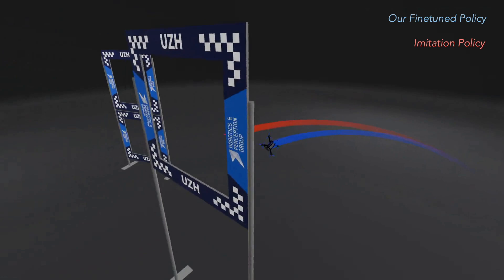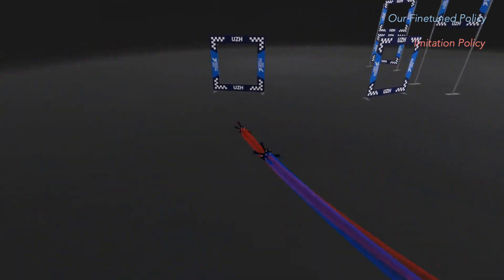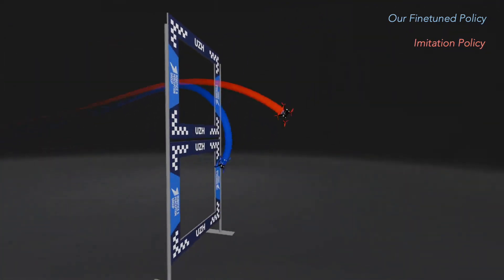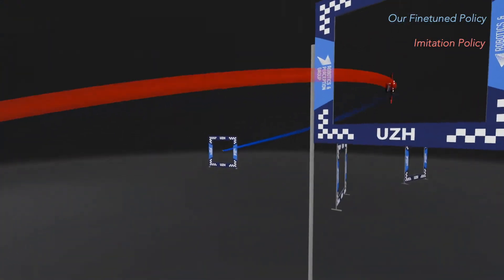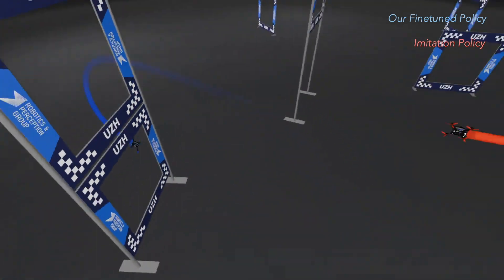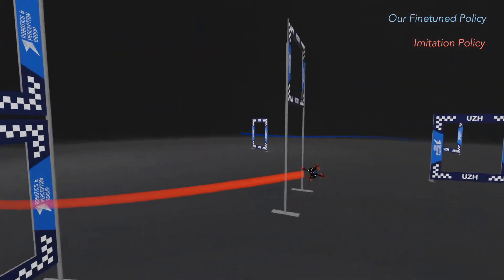Comparing to the IL policy, our fine-tuned policy can fly faster by executing trajectories that enable higher speed. We also demonstrate that an end-to-end policy can even achieve similar performance to a human world champion with our framework.